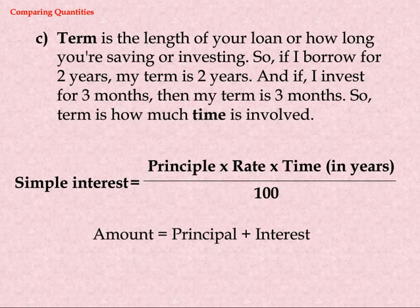Simple interest equals principal into rate into time in years divided by 100. Amount equals principal plus interest.